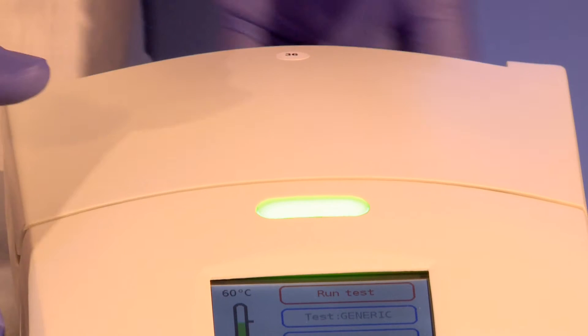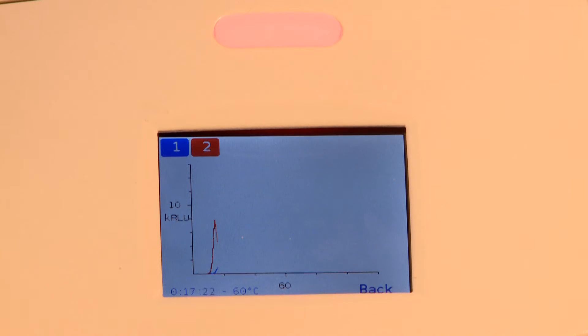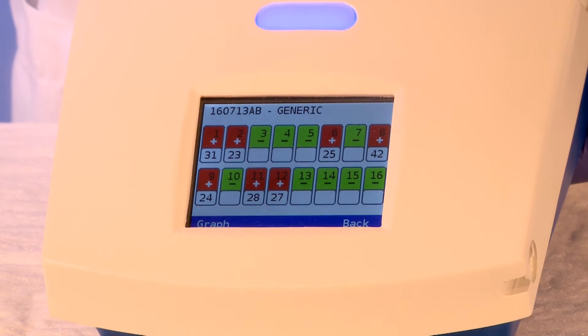When using the PC Run Reader, reactions can be followed in real time. Results can be viewed in the form of a graph or as a positive negative on the screen.